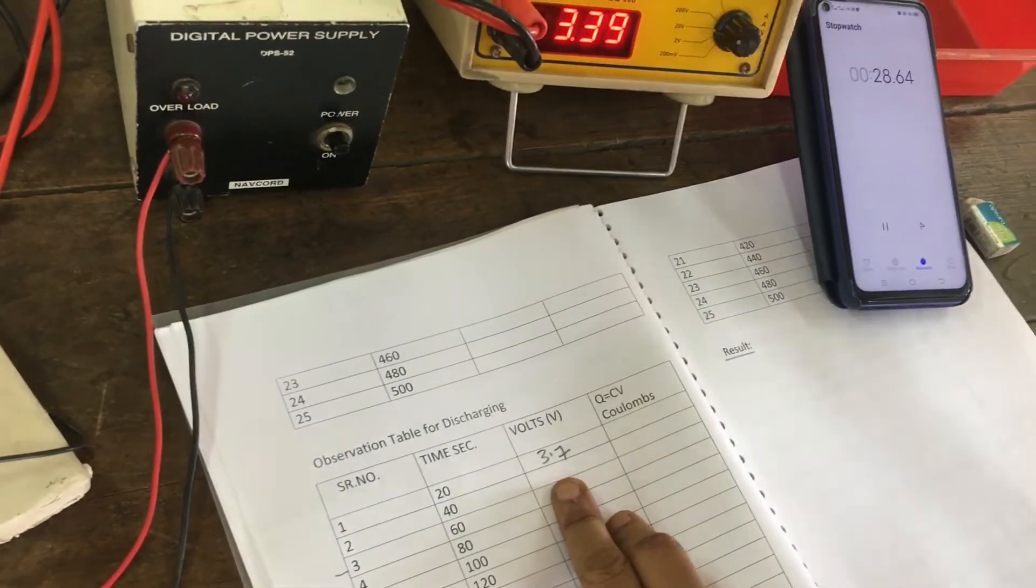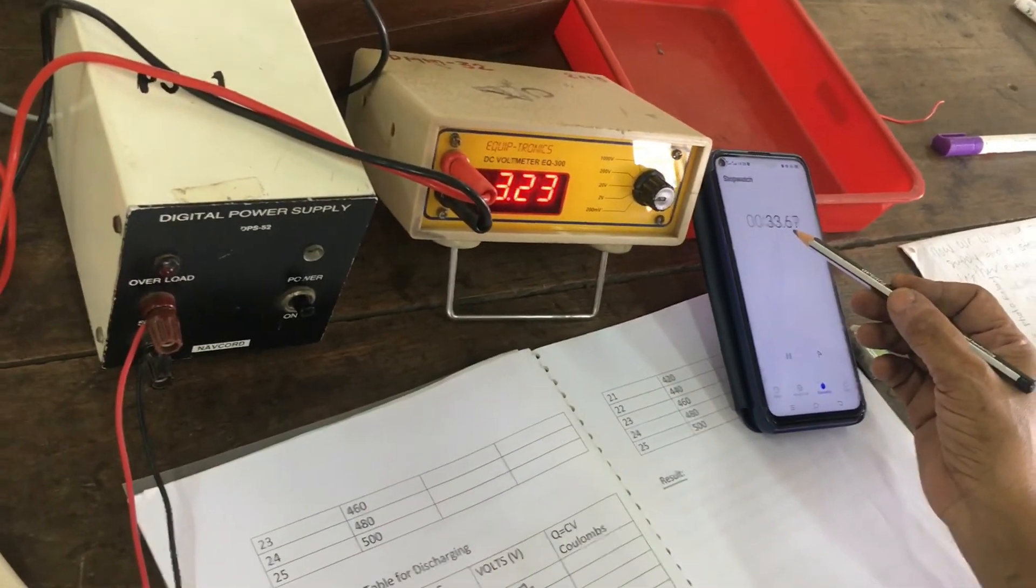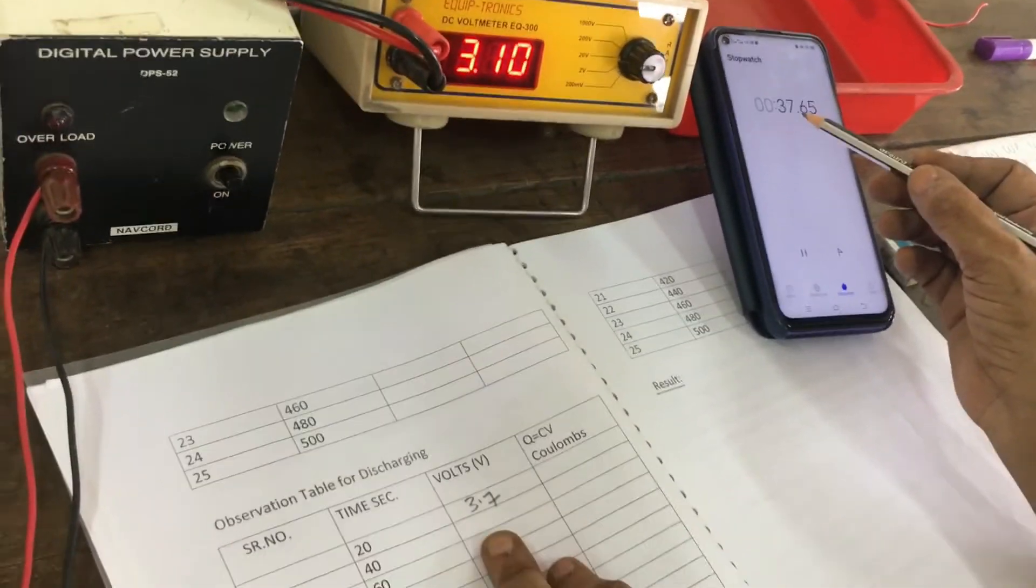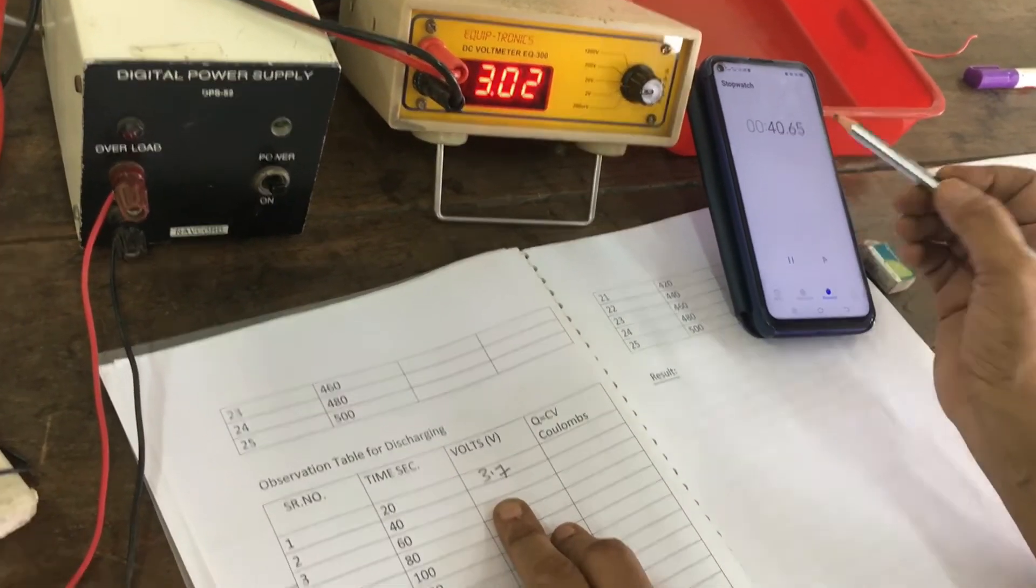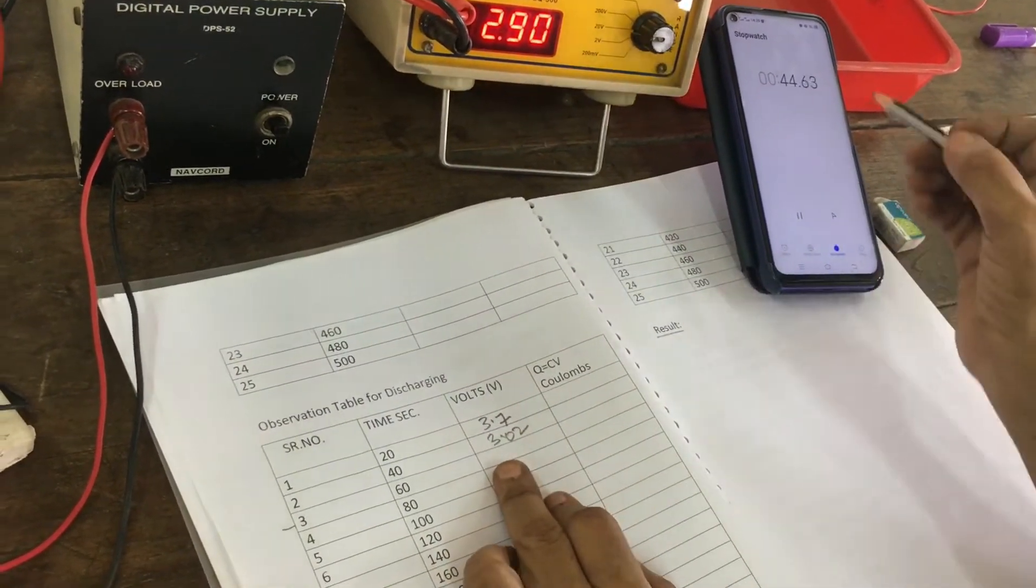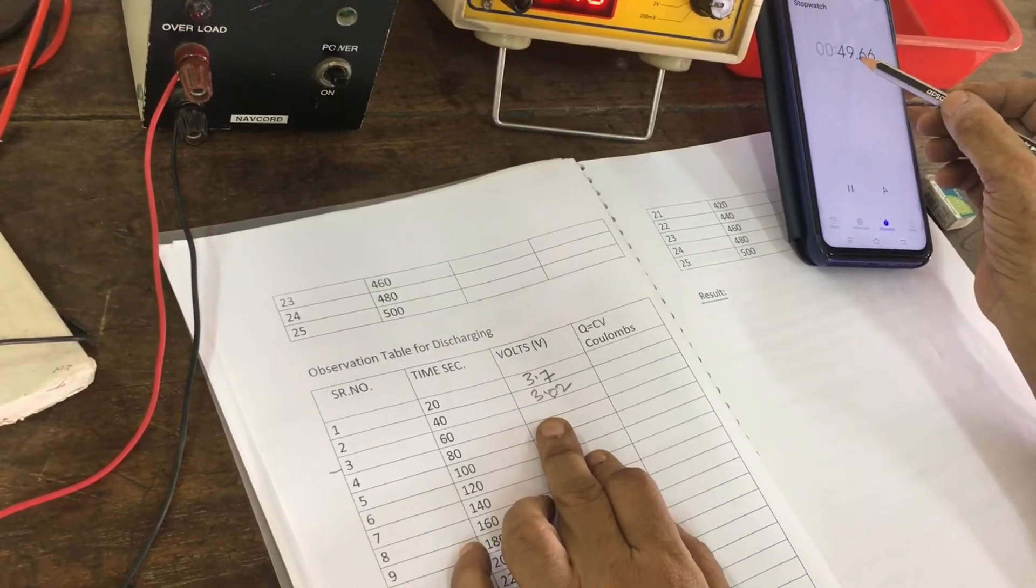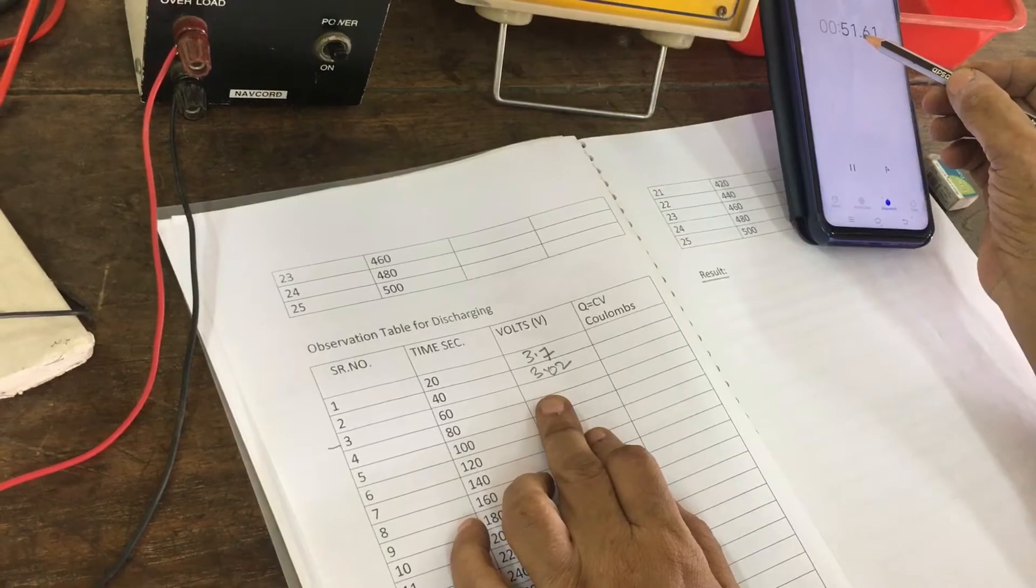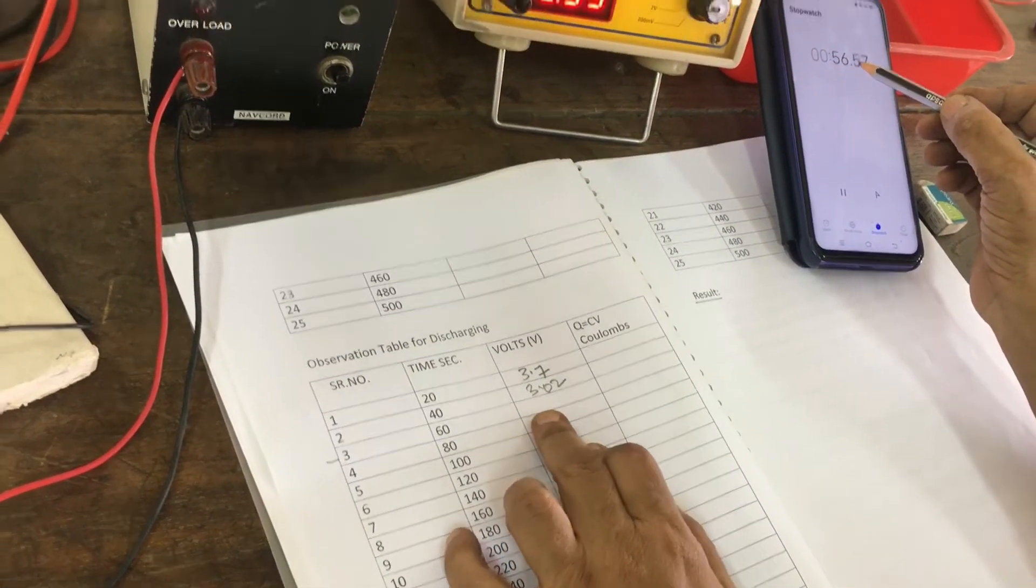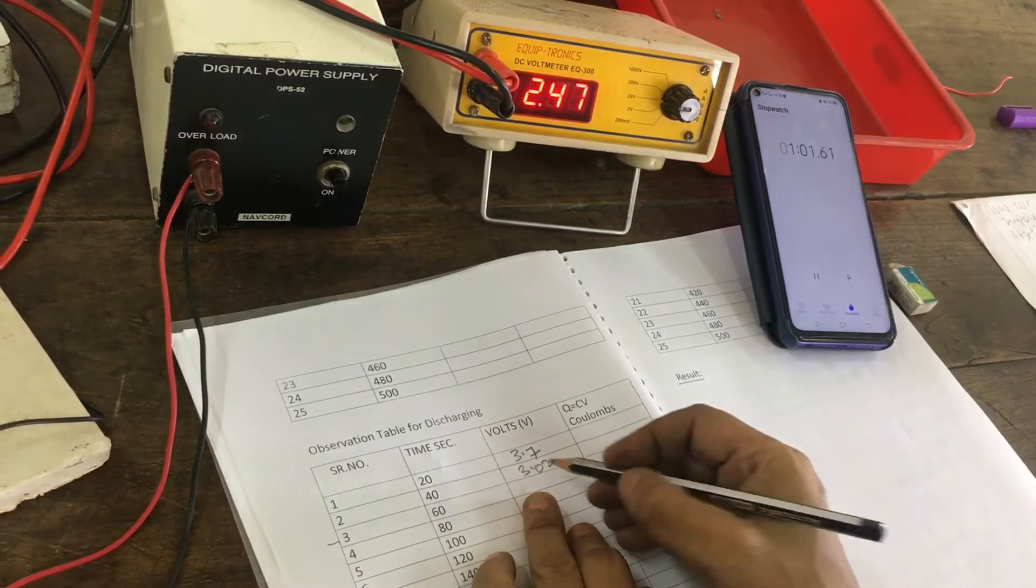At 40 seconds and at 60 seconds: 2.51 volt.